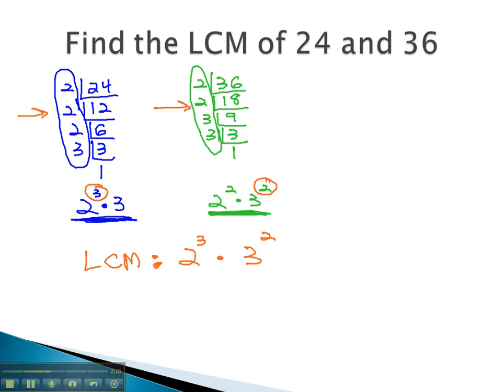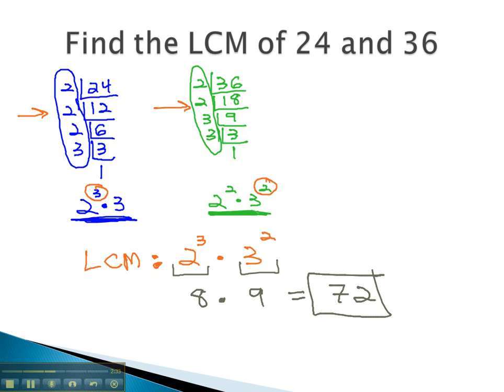The least common multiple, then, of 24 and 36 is whatever 2 cubed times 3 squared is. Order of operations asks us to do the exponents first. 2 cubed is 8, 3 squared is 9, and 8 times 9 is 72. We now have our least common multiple of 24 and 36.